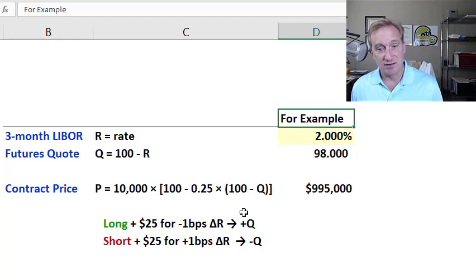On the other side of the trade, a short position will profit by $25 for a single contract if the LIBOR rate increases.